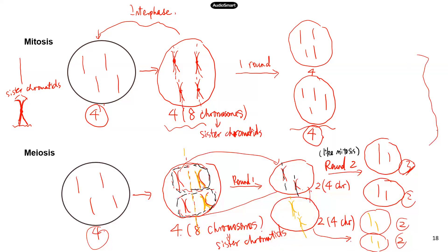That's really the gist of mitosis and meiosis. The key to differentiating the two cell divisions is in round one. Just remember: in round one of meiosis, you do not split the two sister chromatids — the conjoined twins. You only split the homologous chromosomes — chromosomes of the same type, but two different copies: one from the father and one from the mother.